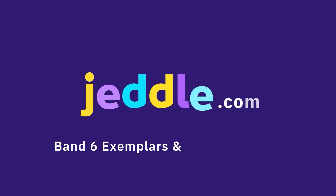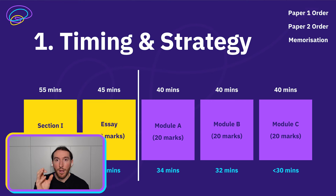Almost every student at the top will do this paper in order because it's already set up in the optimal way for you. Timing and strategy: 32 to 34 minutes for each of your essay drafts.